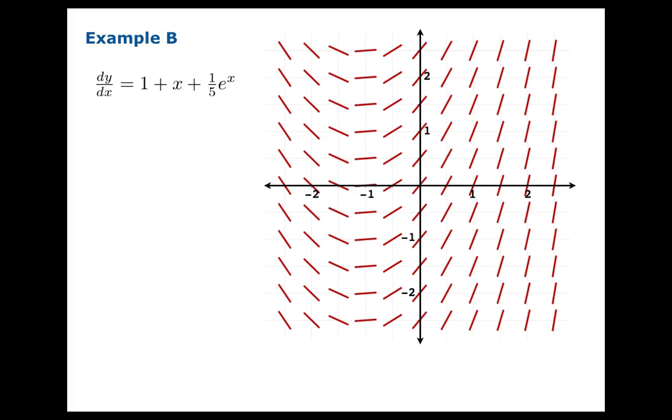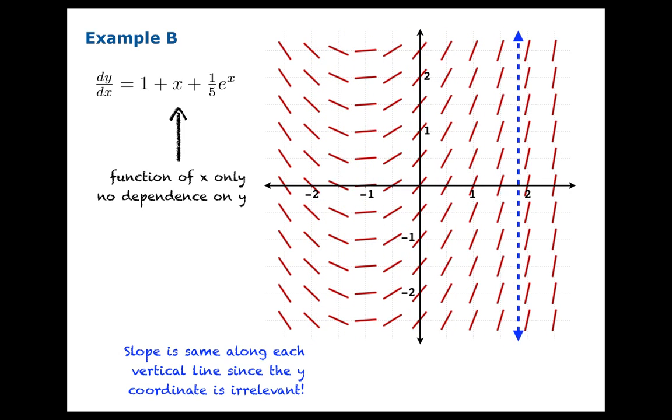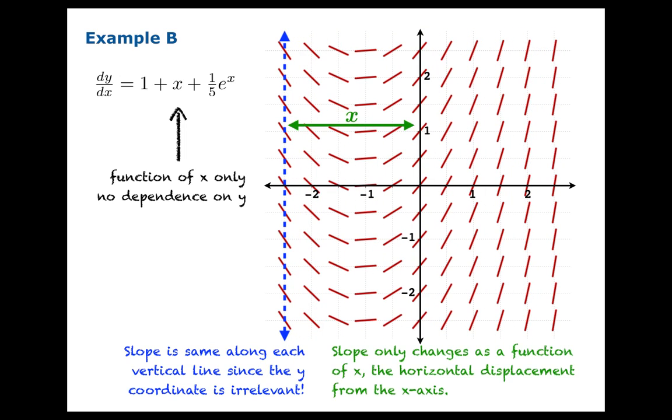A similar thing happens when dy/dx is only a function of x. If there's no dependence on y, then of course the slope is the same along each vertical line, since the y-coordinate is irrelevant, and your slope is only a function of x, the horizontal displacement from the x-axis.